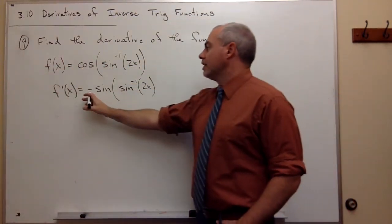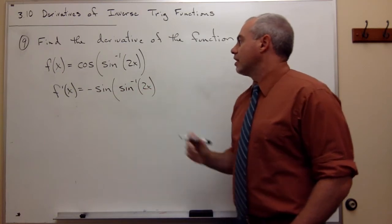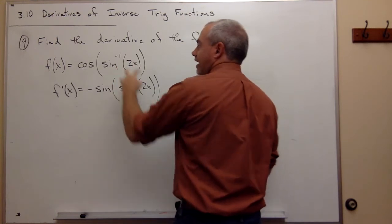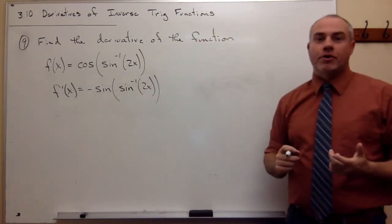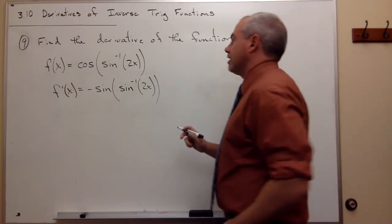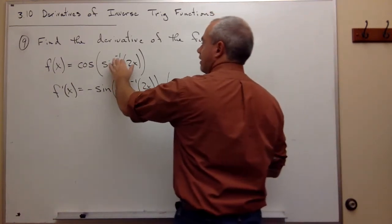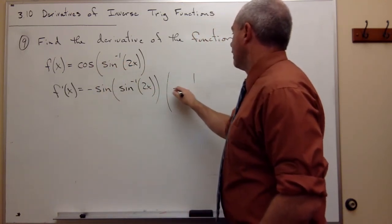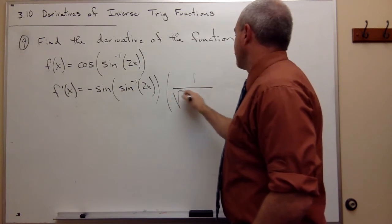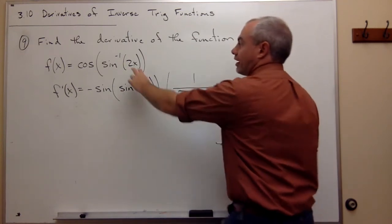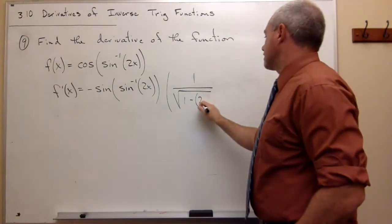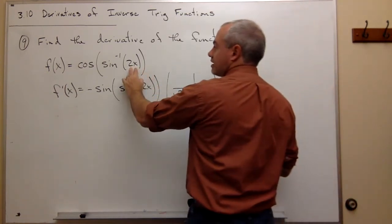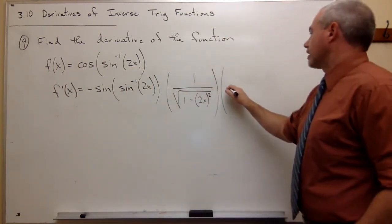So we've got negative sine of sine inverse of 2x, but now we need to multiply by the derivative of what is inside. That derivative we just did in problem number seven, but let's repeat it. The derivative of sine inverse of 2x — the derivative of sine inverse of something is 1 over the square root of 1 minus that something squared, times the derivative of what's on the inside. The derivative of 2x is 2.